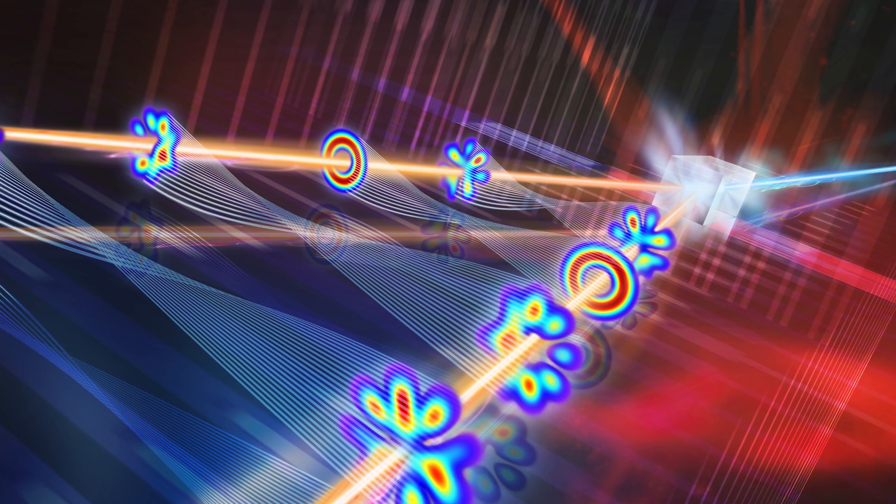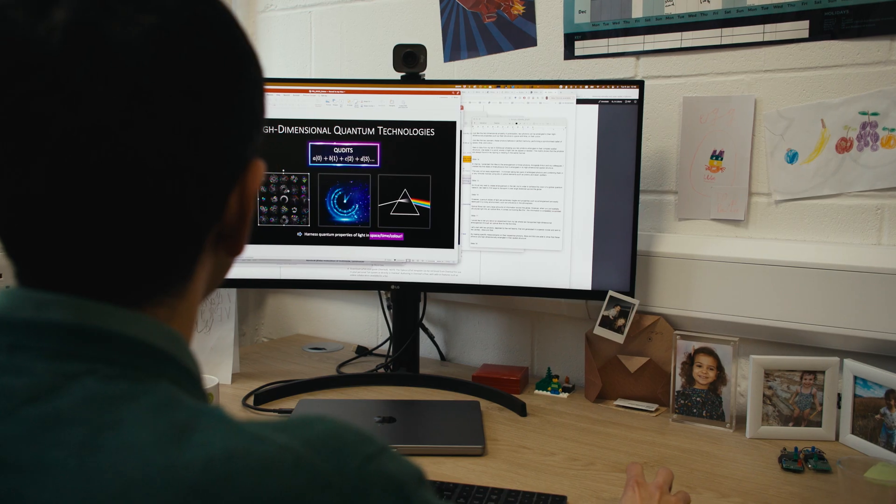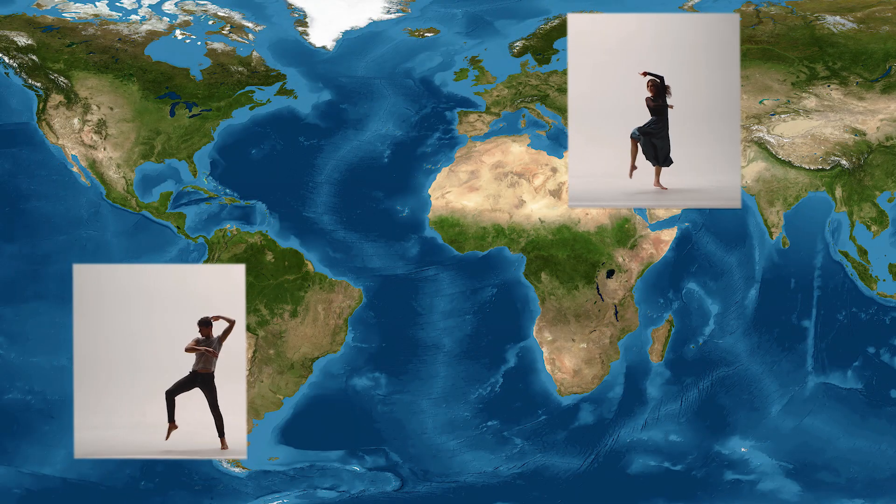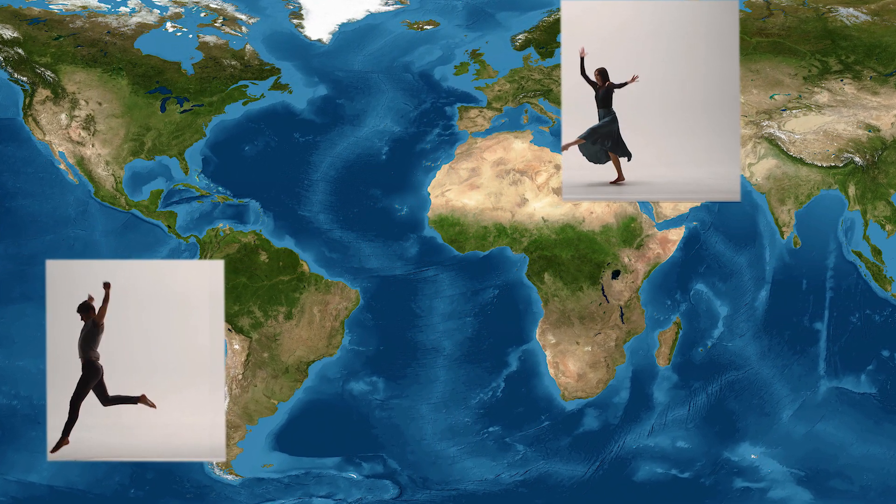Entanglement is a phenomenon that lies at the heart of quantum mechanics. It involves two or more quantum particles that are perfectly correlated no matter how far apart they are. Imagine two dancers dancing on separate continents with their movements perfectly correlated.